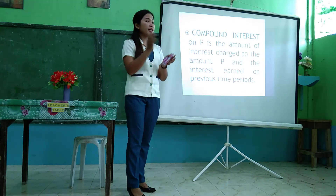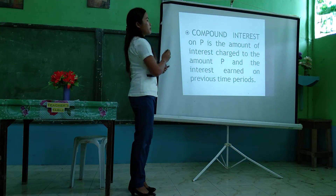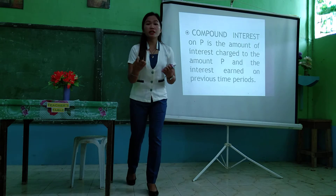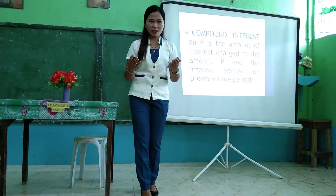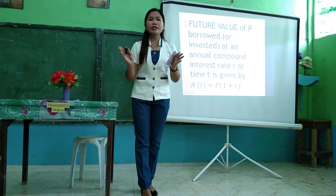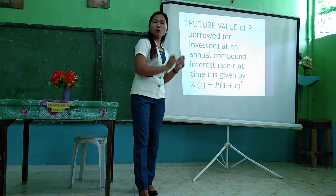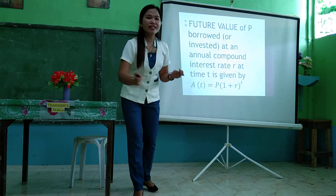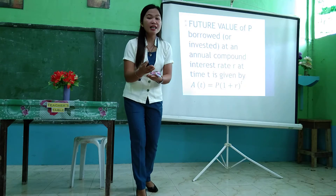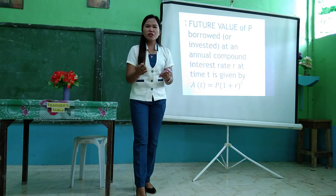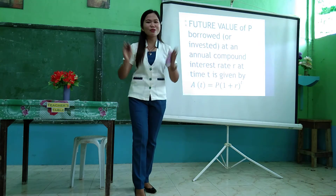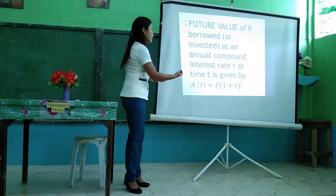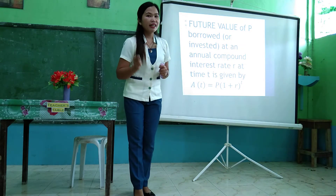What is compound interest? Raphael — correct. Compound interest on P is the amount of interest charged on the amount P, plus interest earned on previous periods — or in other words, interest on interest. What is the difference between compound interest and simple interest that we discussed last meeting? Simple interest is an easy method — it is multiplying the principal by the rate and time. While compound interest is interest on interest. Now, the future value formula is A = P(1 + R)^T. The present value, or principal P, is the amount of money borrowed or invested on the origination date.